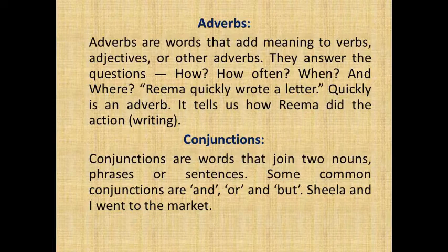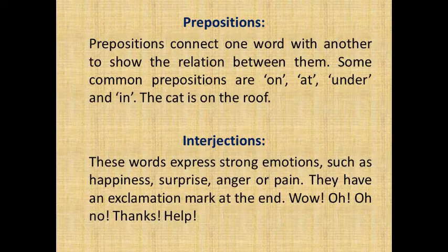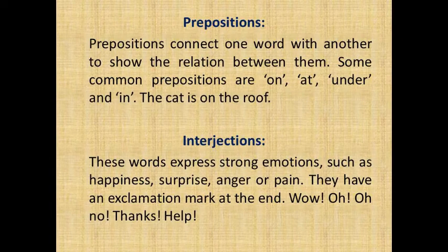Conjunctions are words that join two nouns, phrases, or sentences. Some common conjunctions are 'and', 'or', and 'but'. For example: 'Sheila and I went to the market.' Prepositions connect one word with another to show the relation between them. Some common prepositions are 'on', 'under', and 'in'. For example: 'The cat is on the rope.'